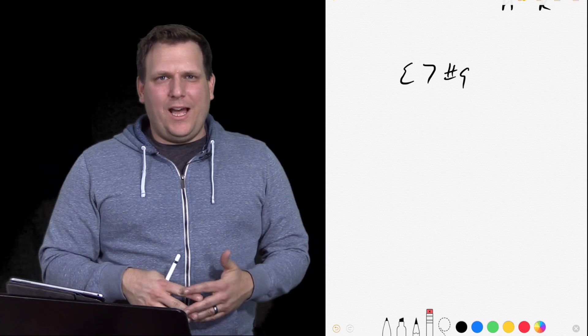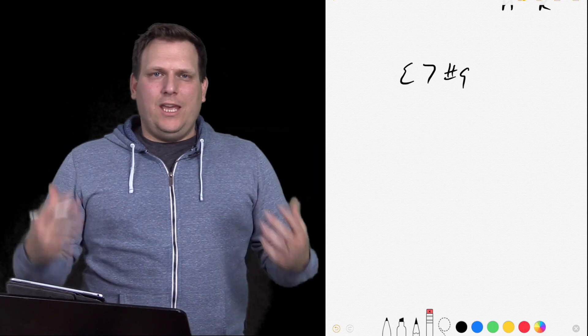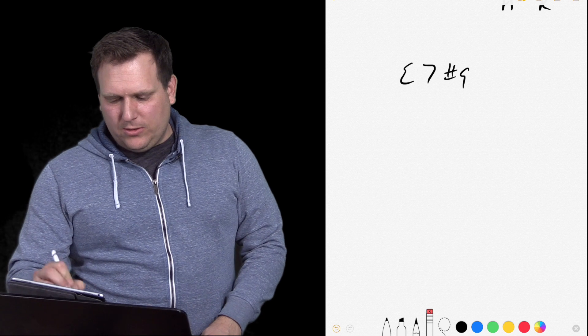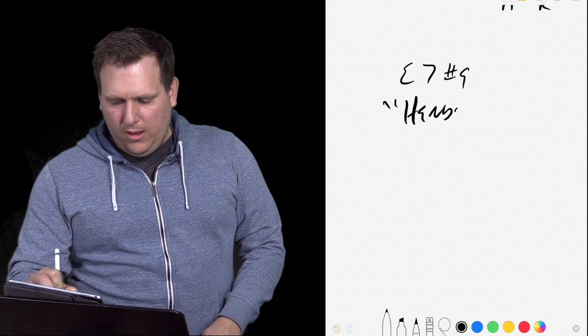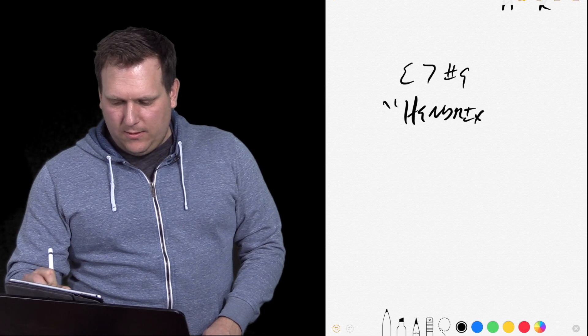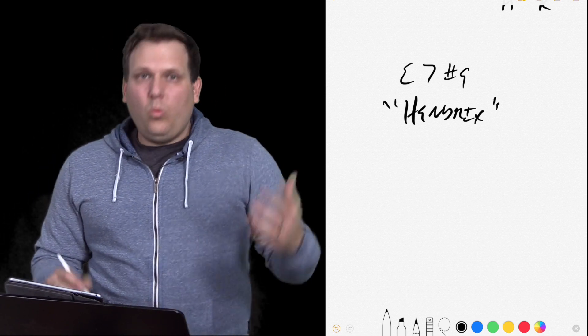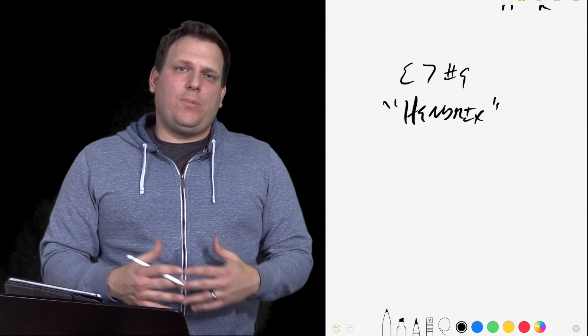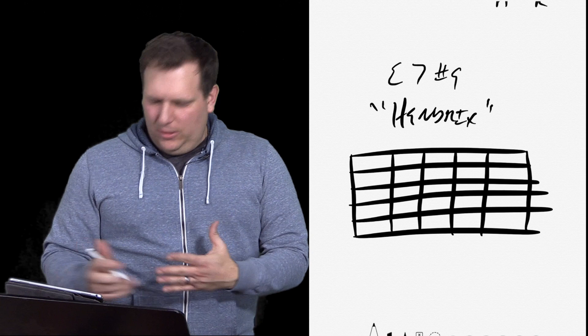Actually, if you Google E7 sharp nine and the word Hendrix, you're going to see all sorts of stuff about the Hendrix chord. So this is also known as the Hendrix chord for those of us in the rock and roll scene. So what is an E7 sharp nine? How do you play it? Well, let me draw out a fretboard here for us. And you're going to have to just work with me here a little bit.